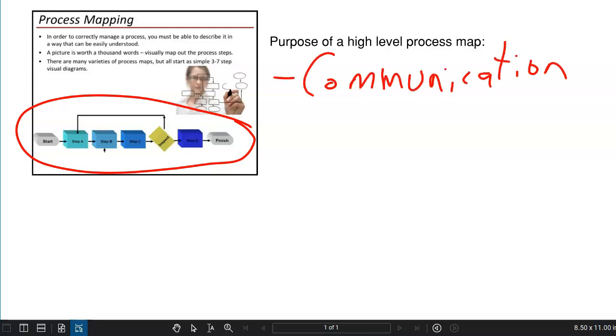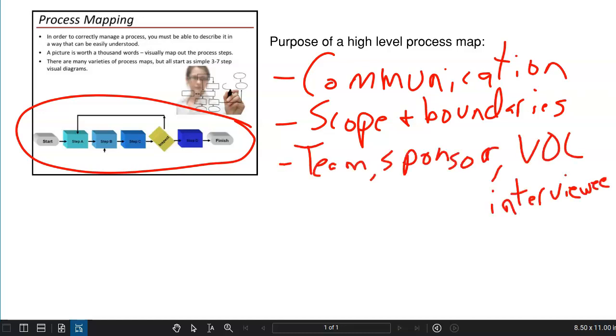High-level process maps are communication tools. They're used to help create clarity around what this initiative is about. They help us to better understand scope and boundaries. Early at the beginning of a process improvement project, there's often a little bit of uncertainty around where is beginning, where is end. High-level process maps are used for a variety of stakeholders, including the team, sponsors, the process owner, representatives within the business. We may be using high-level process maps in and outside of the organization as part of our VOC interviews. For high-level process mapping, a picture really is worth a thousand words. It's a communication tool.